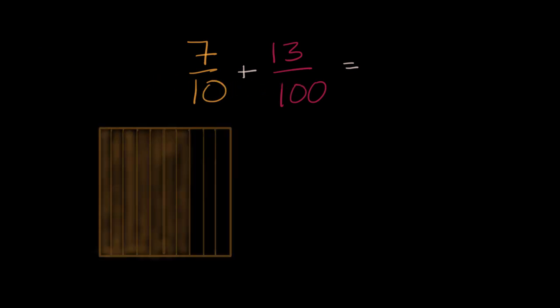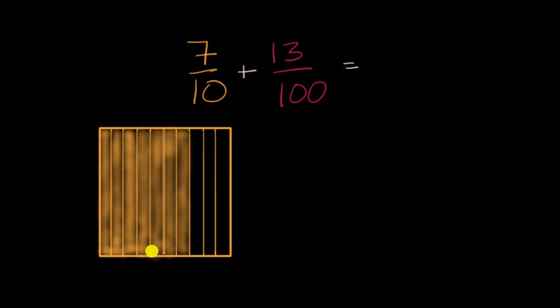Seven-tenths, if we imagine this square is a whole and that we've divided into 10 equal sections, I tried to hand draw it as best as I can. Notice I have filled in seven of those 10 equal sections that we have split the whole into. So this represents seven-tenths.